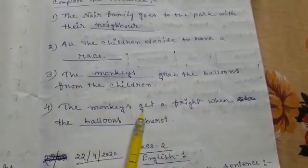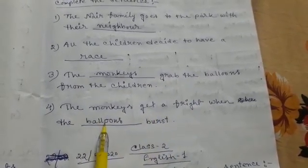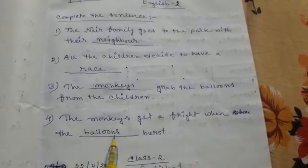Number 4. The monkeys get a fright when the dash burst. The answer is balloons. The monkeys get a fright when the balloons burst.